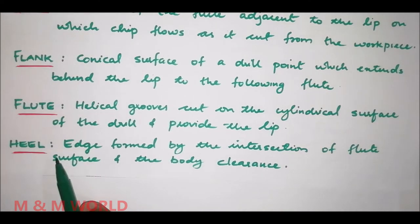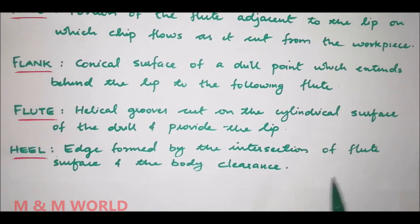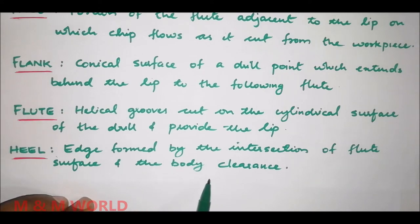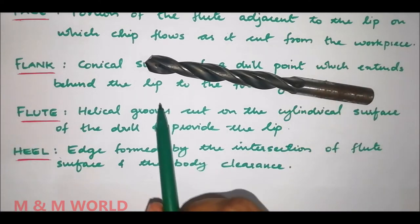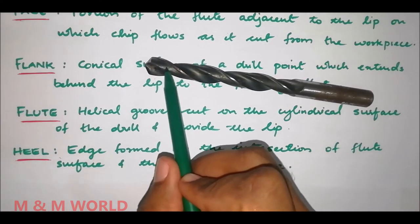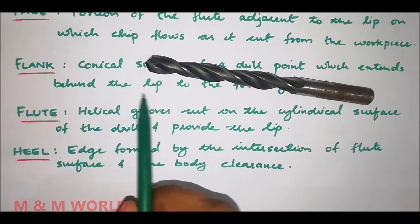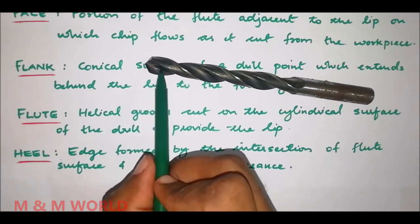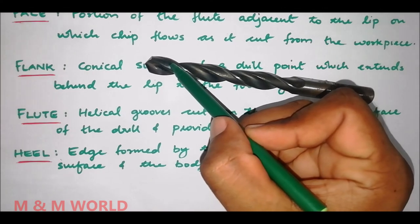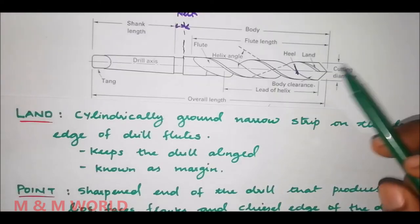Next is the heel. The heel is the edge formed by the intersection of the flute surface and the body clearance. Here you can see the flute surface and the body clearance — this edge formed by their intersection is known as the heel.